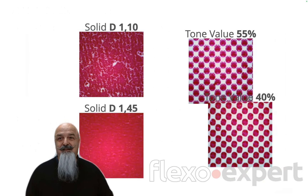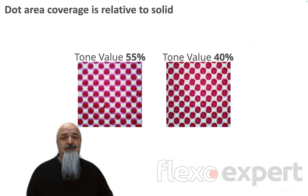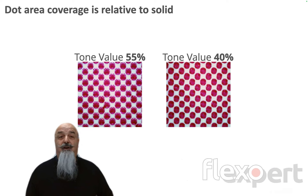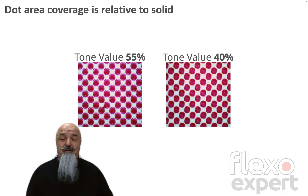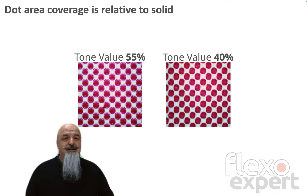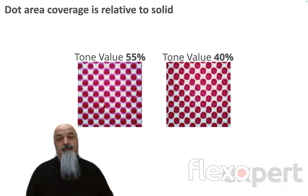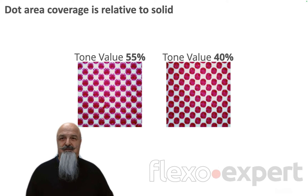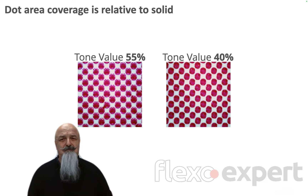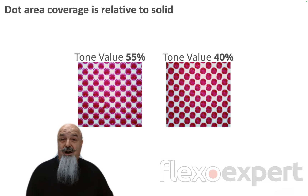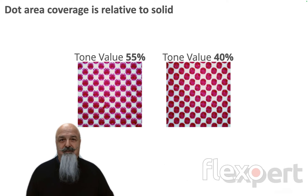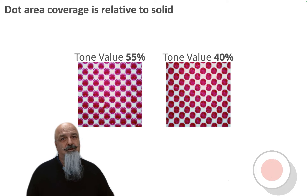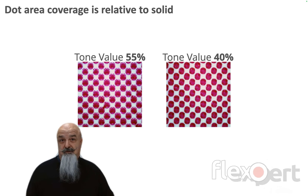It's interesting, because these two tone values look almost identical, if not for a little slurred feathering on the 55%. I would never guess that one is 55% printed and the other is 40% printed. This means that the tone value of halftone is relative — it depends on the values of the solid and the substrate.